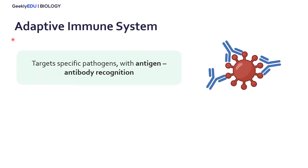Today we're going to be talking about B cells, which are part of our adaptive immune system. Our adaptive immune system is built to target specific pathogens, and it does this with antigen-antibody recognition. On the outsides of pathogens such as viruses — here in red we have a virus — we have antigens on the outside which are recognized by antibodies. Here in blue is an antibody, and we see that the antibody binds to the antigen, and when that happens an immune response is signaled.